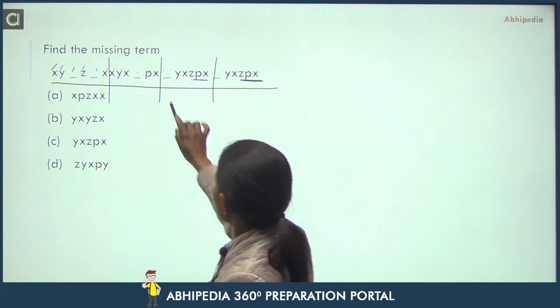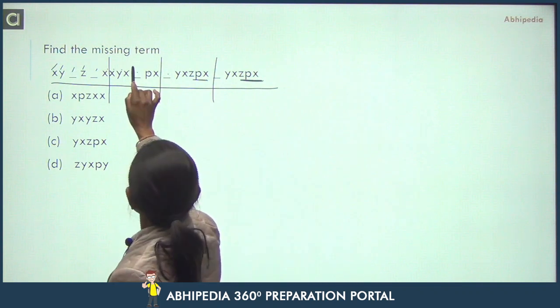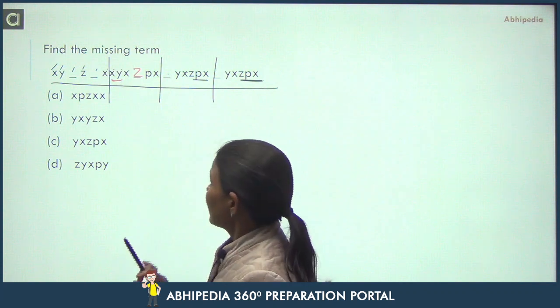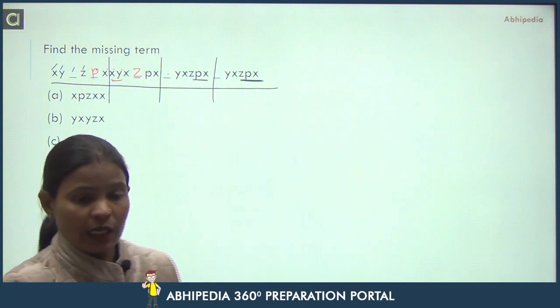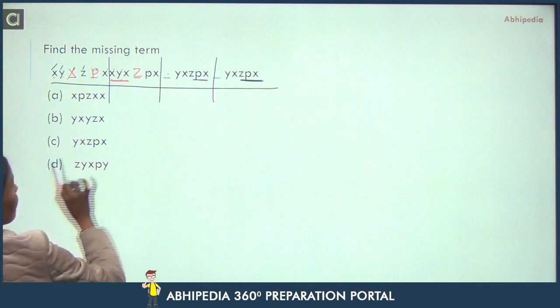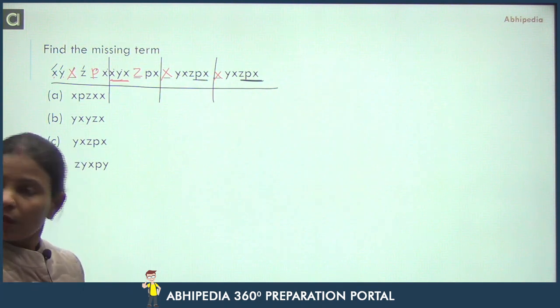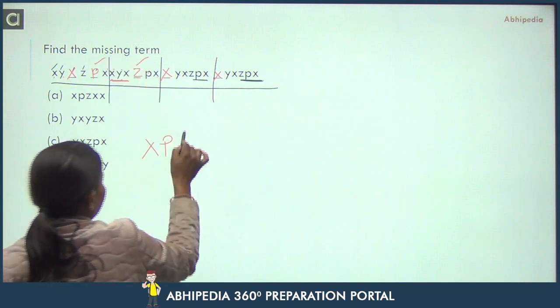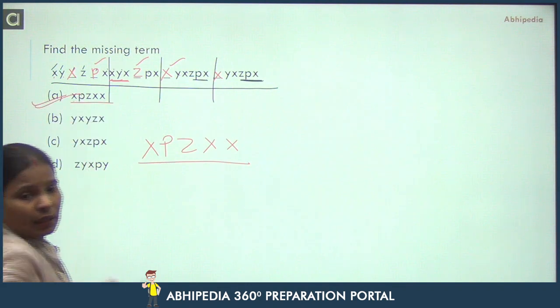The last one is Z, P, X. That means we will make Z, P, X groups. Now see, the pattern starting is XY, XY, ZPX, ZXY, last ZPX. See, starting with XY, that means what should happen: XY, ZPX, XY, ZPX, XY, ZPX. Now watch what we have filled - it will be complete. First we filled X, then P, then Z, then X, then X. So the answer is XPZXX. A will be the correct answer.